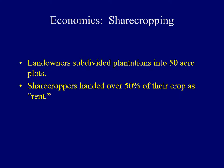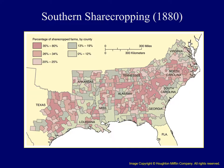In the Deep South, about three-quarters of the land was sharecropped. Most black families were sharecroppers, but there were a significant number of white families who also sharecropped the land. This map provides a visual aid demonstrating the percentage of sharecropped farms by county in the American South by the late 1800s.